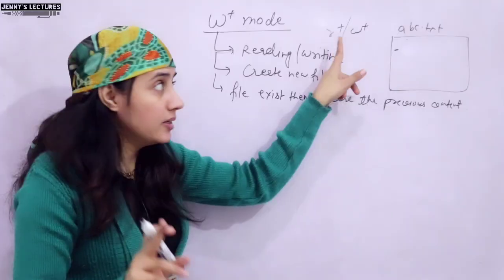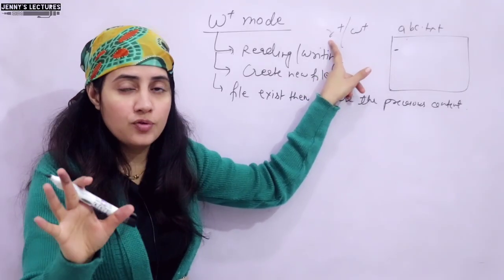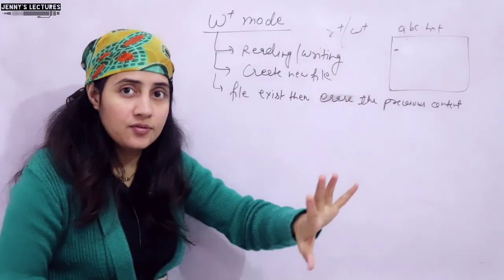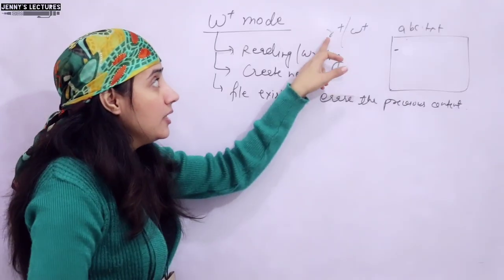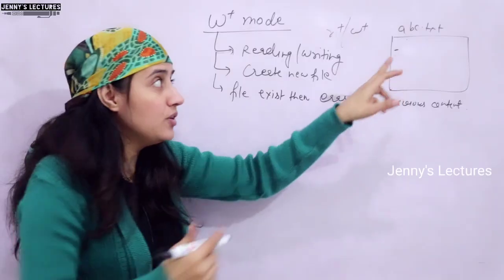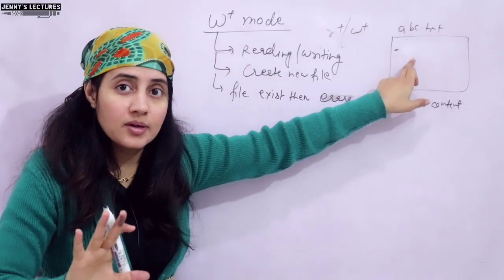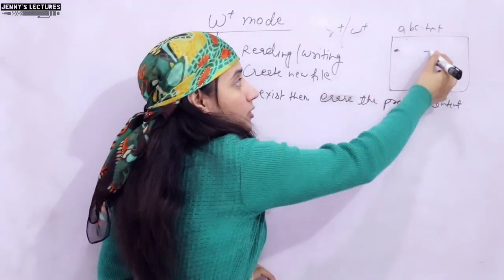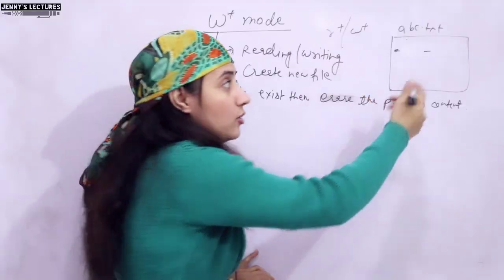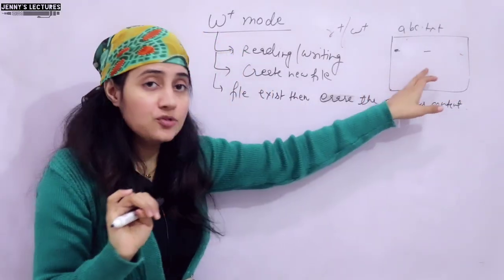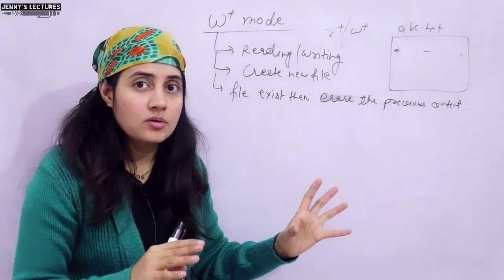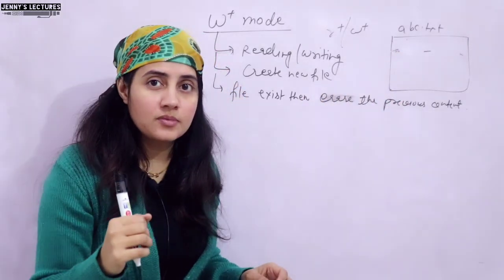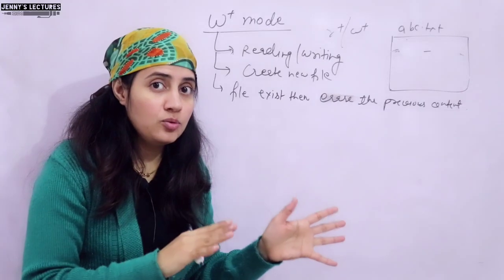Both modes are for reading and writing. But in R plus mode, if the file doesn't exist, it will not create a new file — it will return null. In W plus mode, if the file doesn't exist, it will create a new file and open it. In R plus mode, if the file exists, it opens the file but the previous content is not erased — it stays as is — and you can add new content wherever you want: at the start, middle, or end. So mainly if you want to update a previous file, use R plus mode. But in W plus mode, the previous content is erased and you write new content from the start.